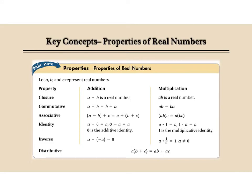Here are the properties of real numbers that we're going to be looking at. We're really not going to look at closure, but we're going to look at commutative, associative, identity, inverse, and distributive.